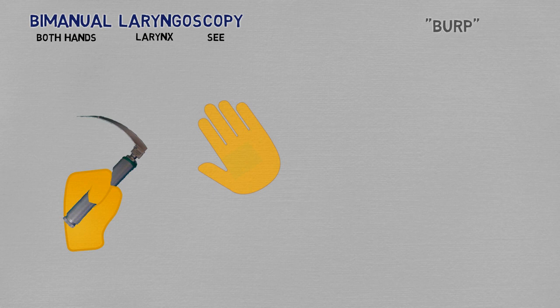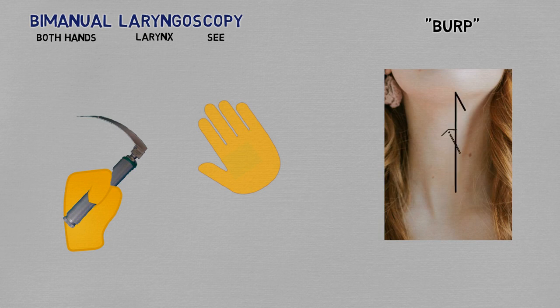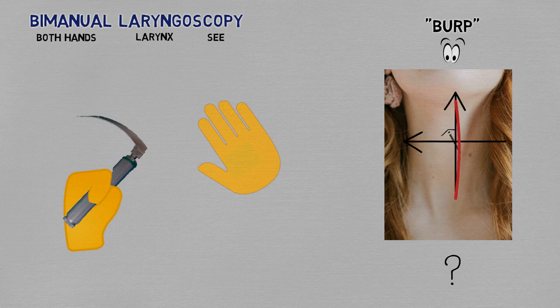Traditional texts will suggest the burp technique, asking an assistant to apply backwards, upwards and rightwards pressure on the larynx to position it optimally. The arrow direction is inverted here because it's considering the patient's perspective and not yours on the screen. First of all, why rightwards pressure, you ask? Last I checked, our necks weren't crooked to the left or anything.